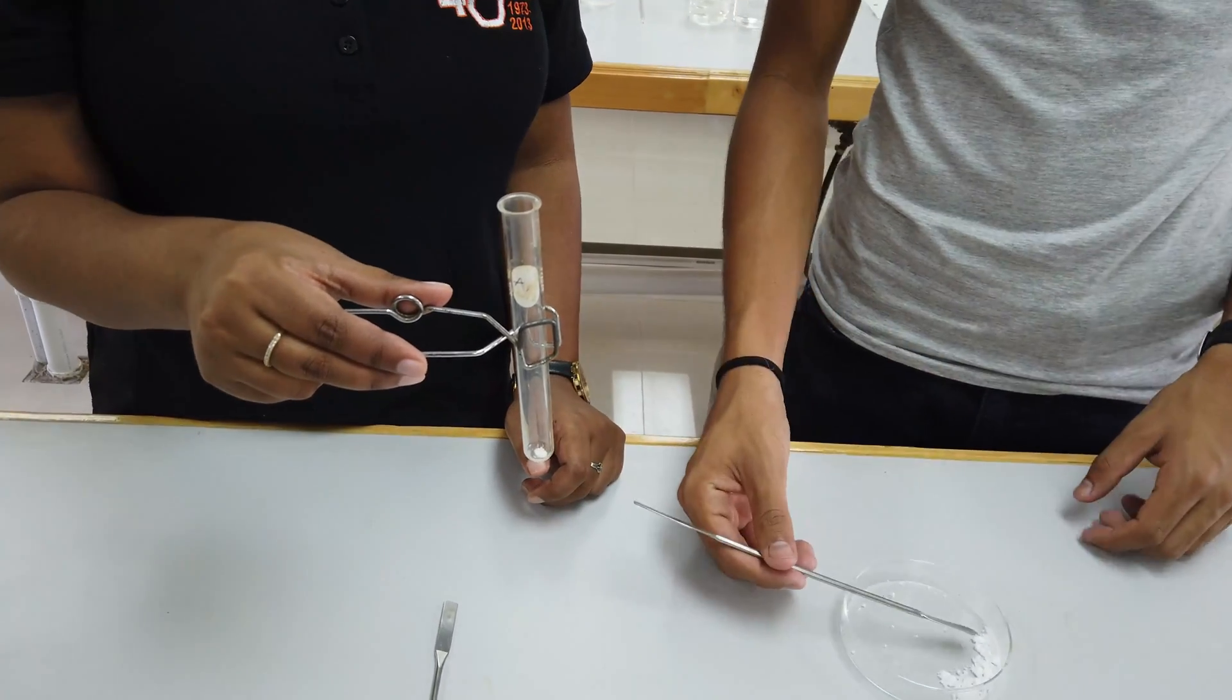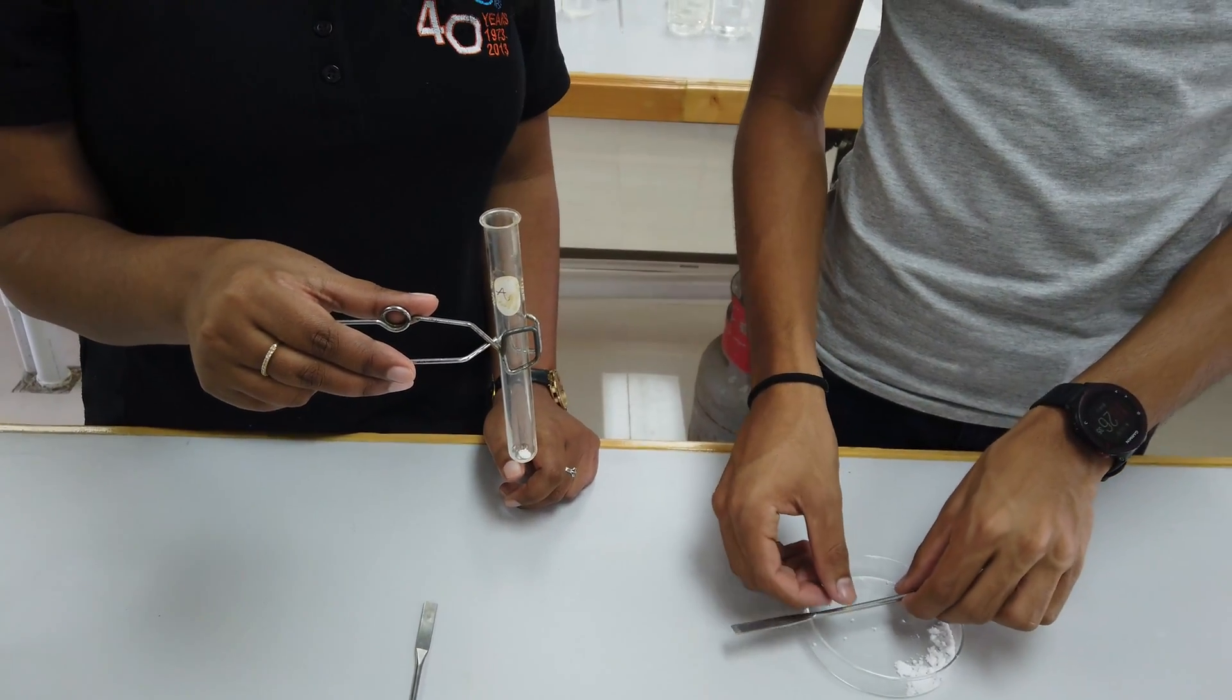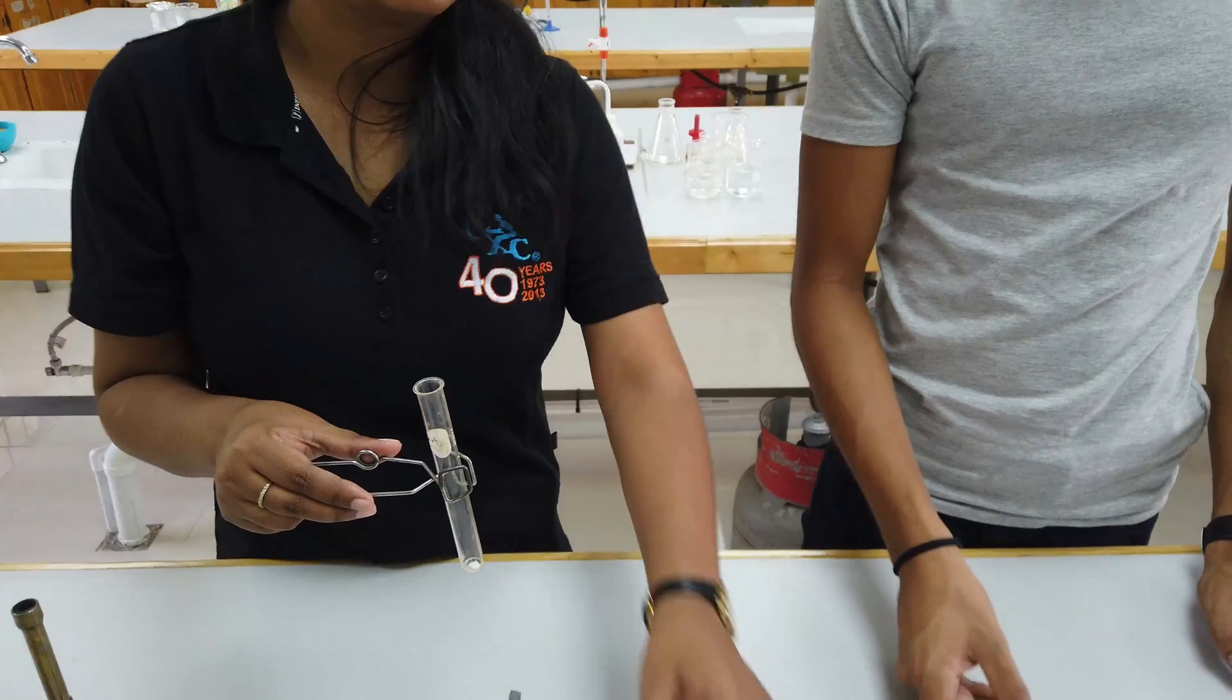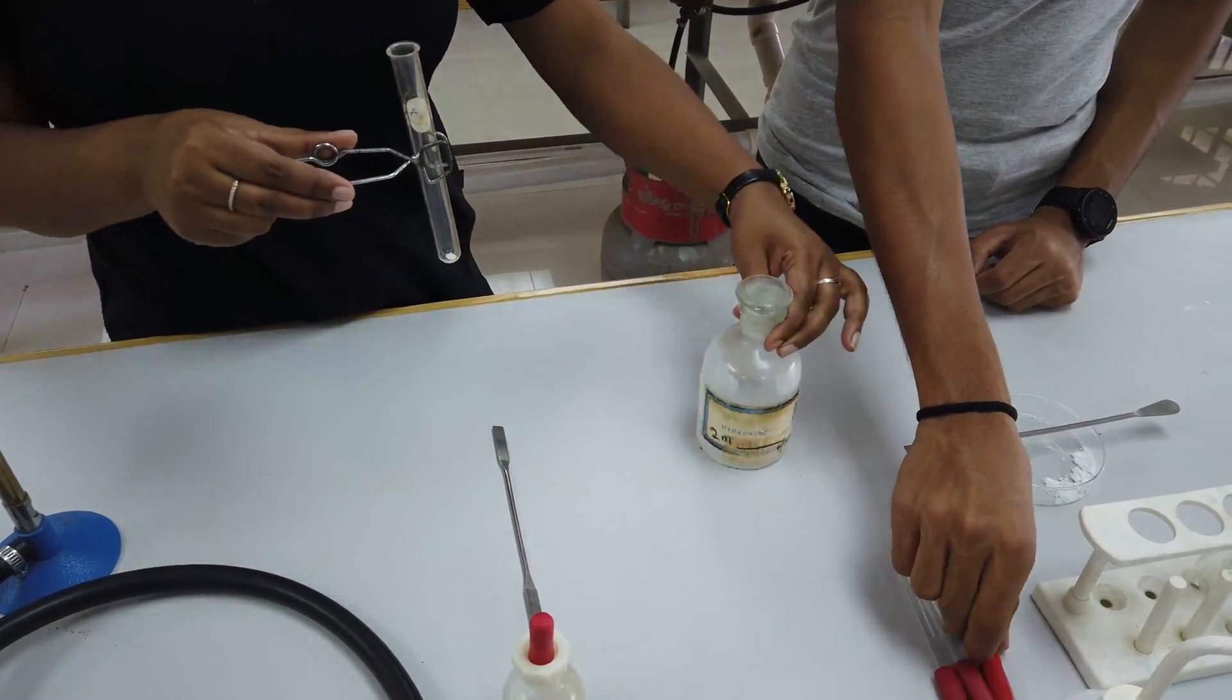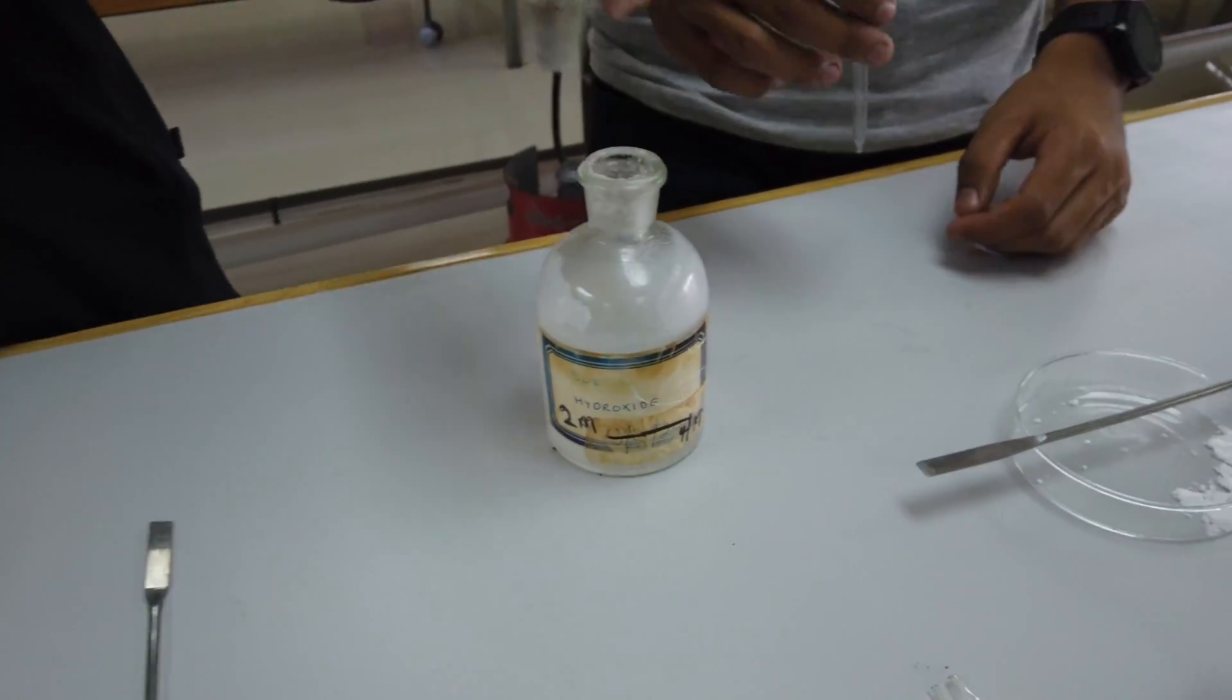Now we're going to add sodium hydroxide dropwise, and what we're looking for is a change in solubility and a change in color. Dropwise literally means one drop and shake it up, one drop and shake it.